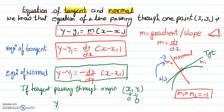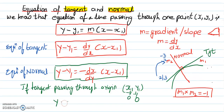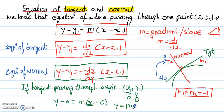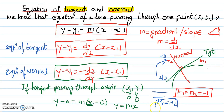So the equation becomes y minus 0 equals m times x minus 0, which gives you y equals mx. For perpendicular lines, the relationship is m1 times m2 equals minus 1. For parallel lines, if lines are parallel, then m1 equals m2. These things you need to remember.